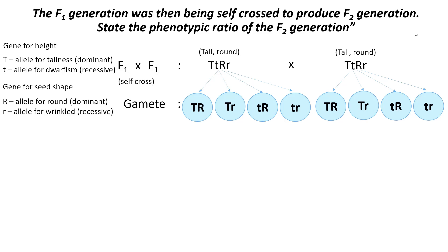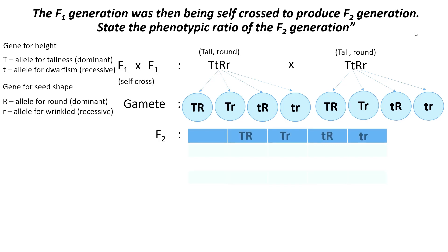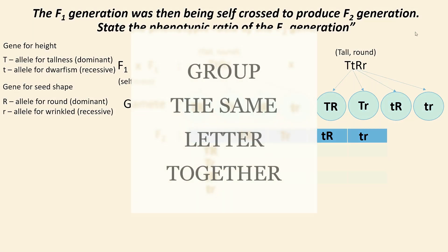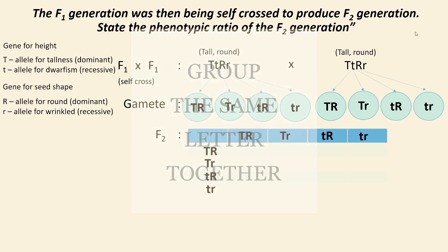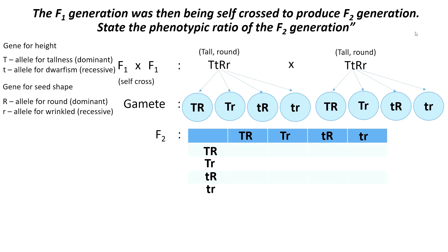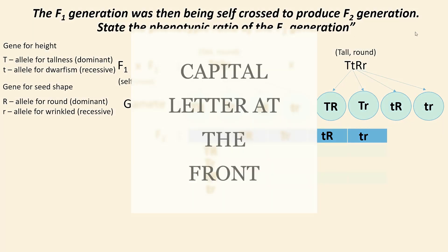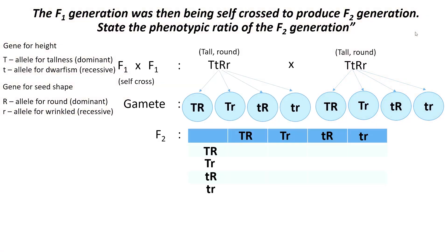To help you combine the alleles during fertilization and get the F2 generation, build the Punnett square like this. Place all the alleles from one parent on the top row of the table, then place all the alleles from another parent on the leftmost column. Then slowly combine the alleles — remember to group the same letter together, T with T and R with R — and make sure to put the capital letter at the front and the small letter at the back.